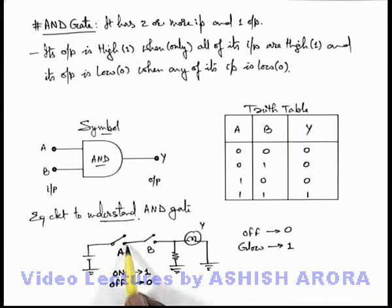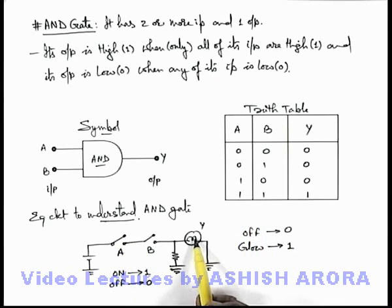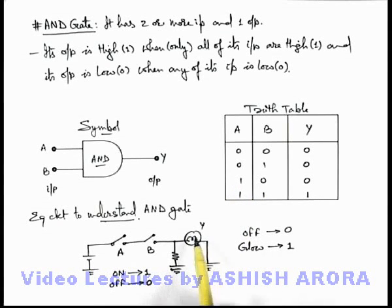Here we can see if both the switches are kept on, that is when A and B are 1 and 1, the bulb will also glow. Otherwise, if any of these are switched off, or both of these are switched off in zero state, we can see the bulb will be off.